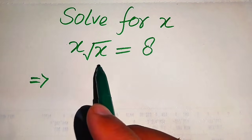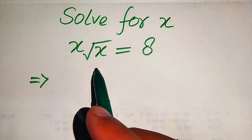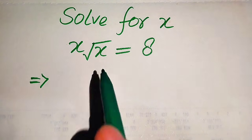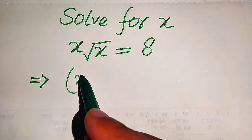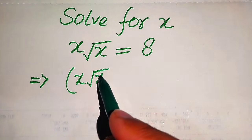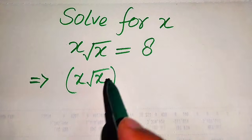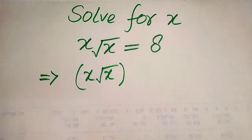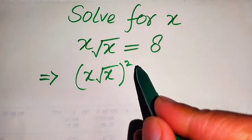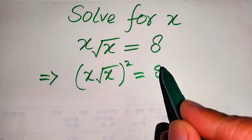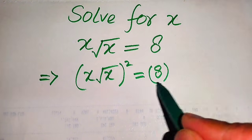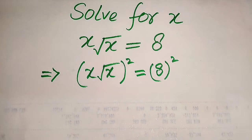The very first thing we are going to do is remove this square root sign from the left hand side. In order to remove this square root sign, we need to take squaring on both sides. After applying squaring on both sides, it will be written in this form: (x√x)² = 8², because our target is to get the roots of this equation.